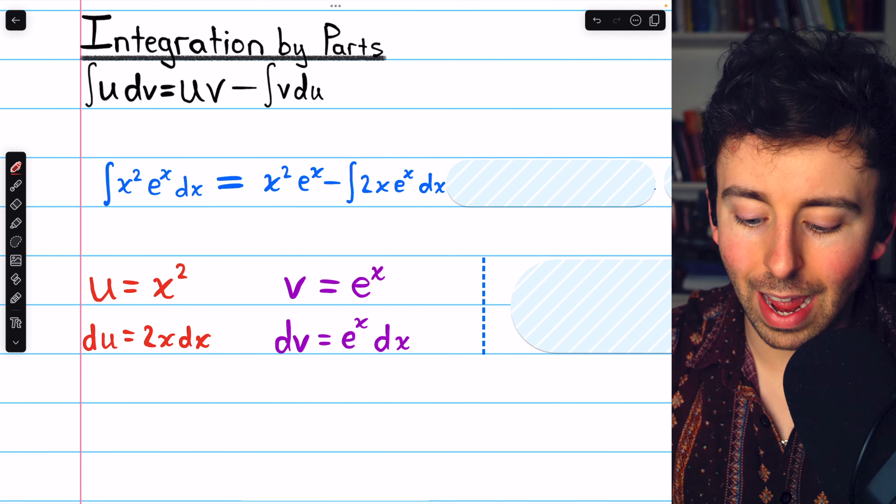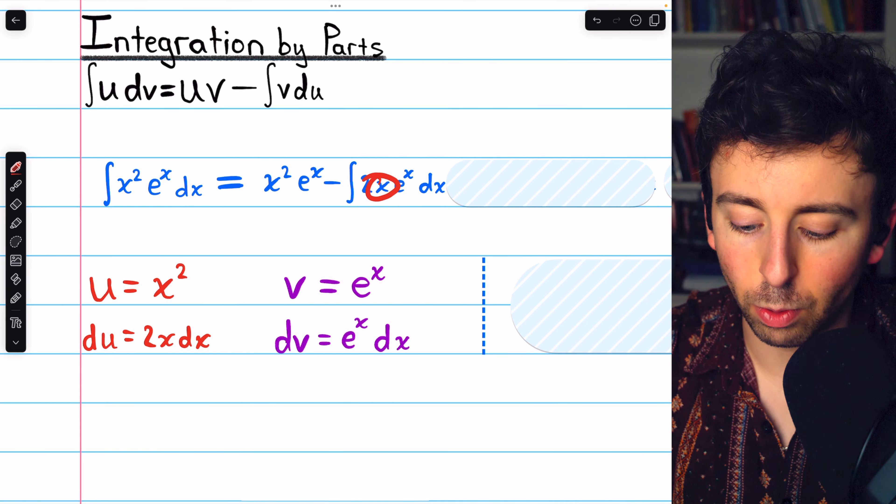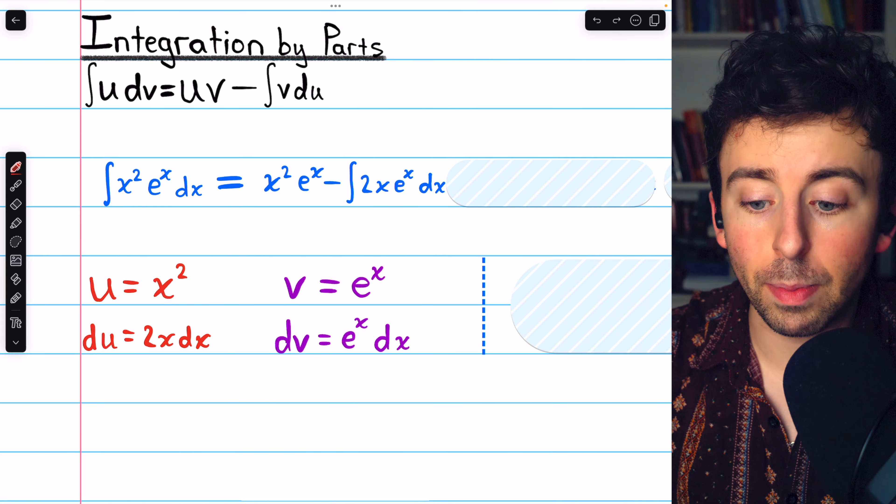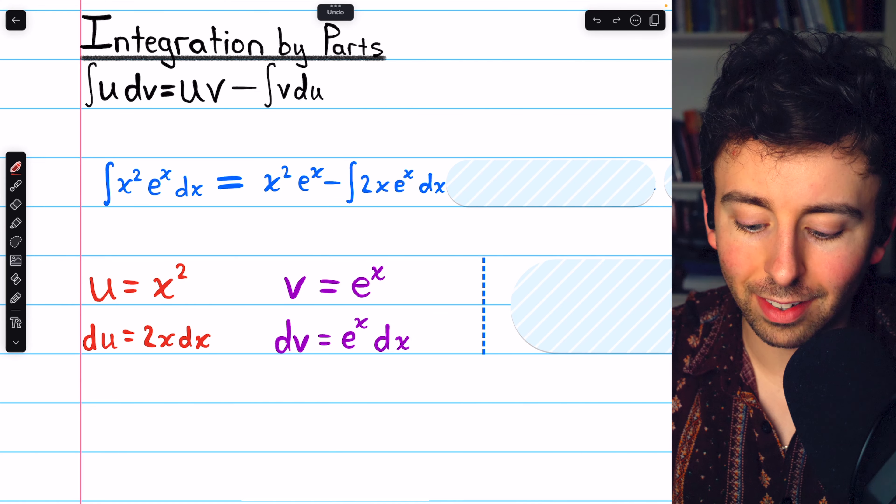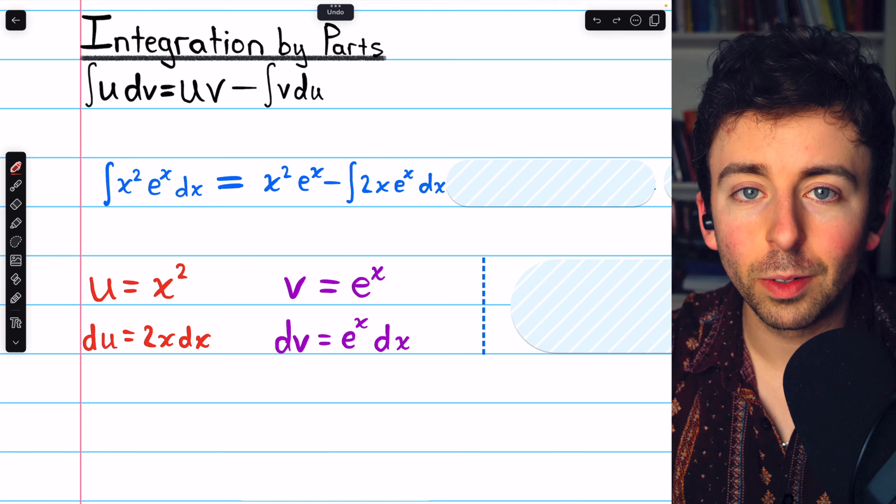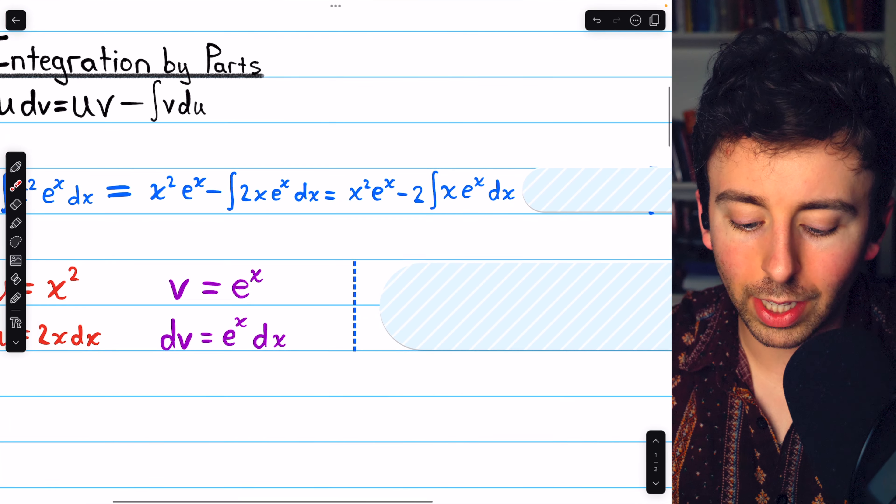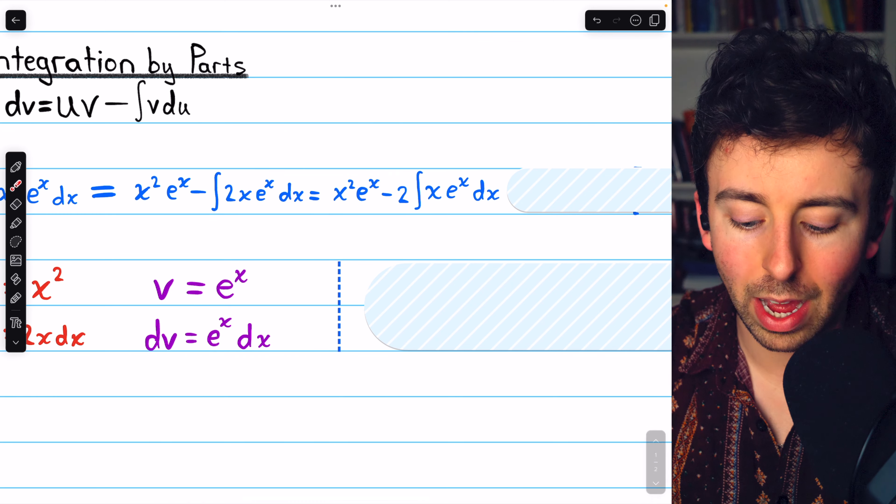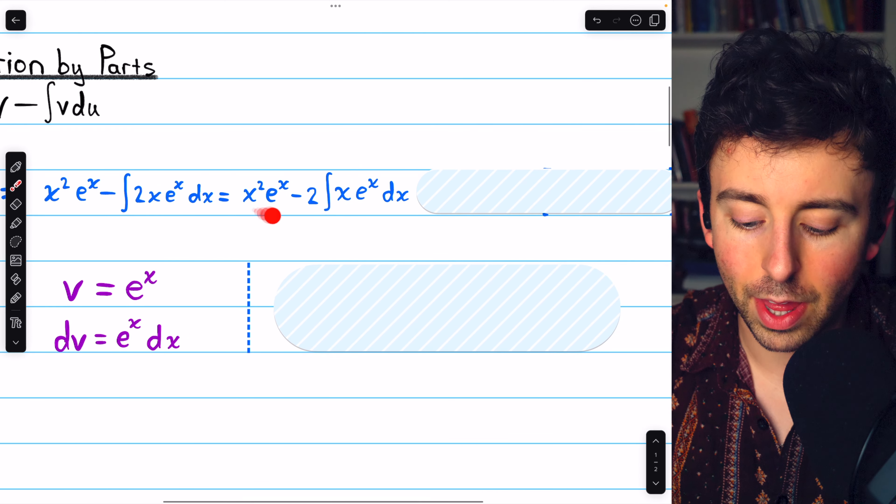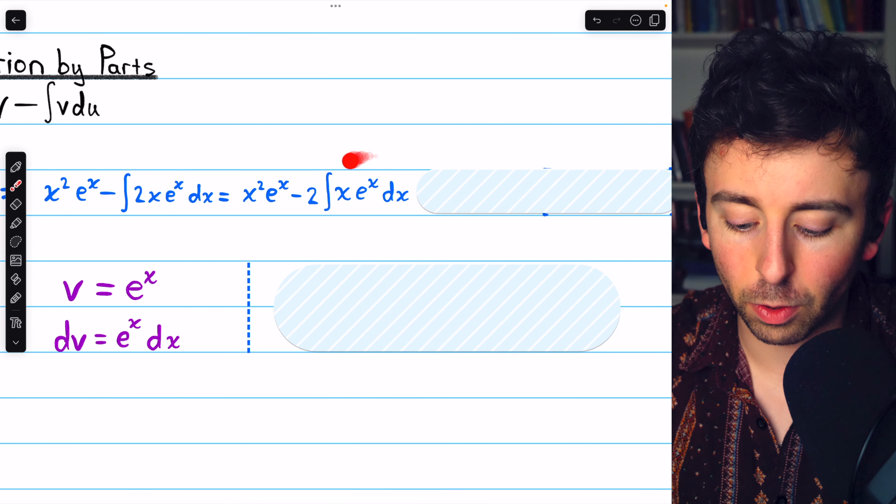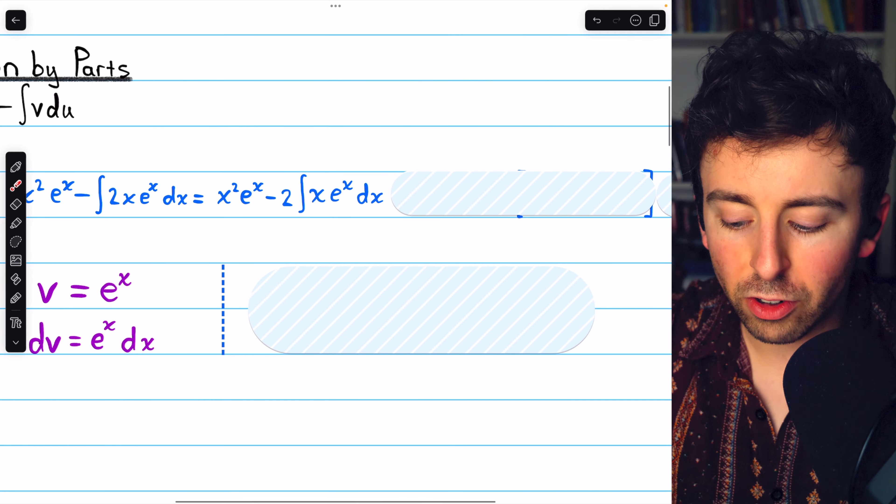But again, we have an algebraic function, 2x, multiplied by a transcendental function, e to the x, and we have to integrate this. So again, we need to use parts. Before we apply parts one last time, let's just take that 2 out of the integral, and this integral we're going to use parts on, just like before.